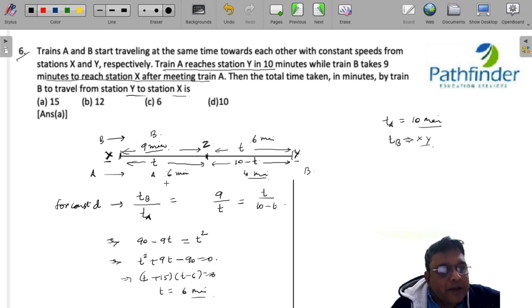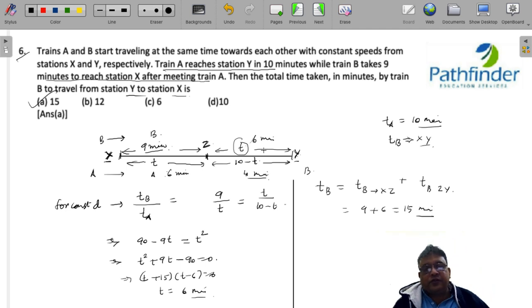Again, we do the same thing. We need to calculate this time T is 6 minutes. We have already got 6 minutes. Now, for B, the time taken by B is time taken by B over the distance X to Z which is known plus time taken by B over the distance Z to Y which we have just calculated as 6 minutes. The total time will be 15 minutes which is your answer.